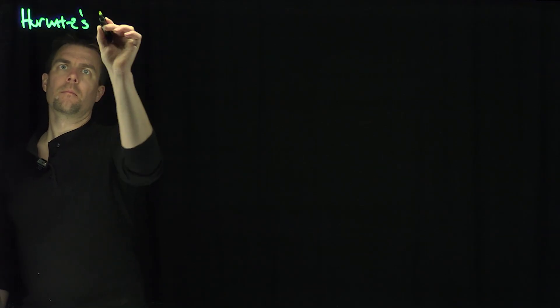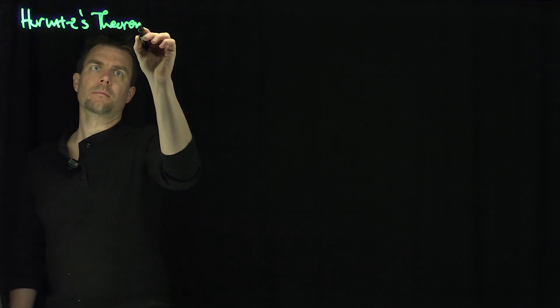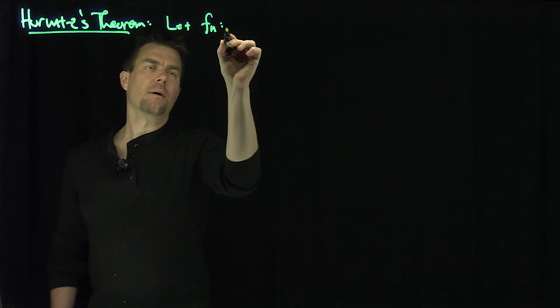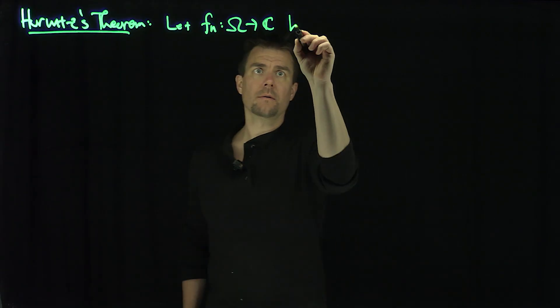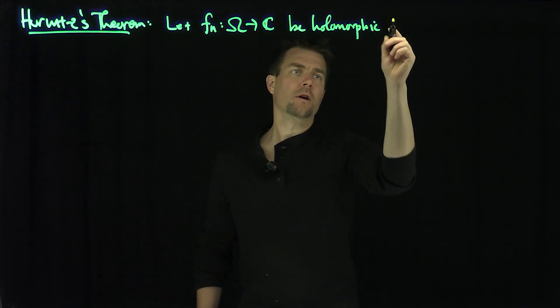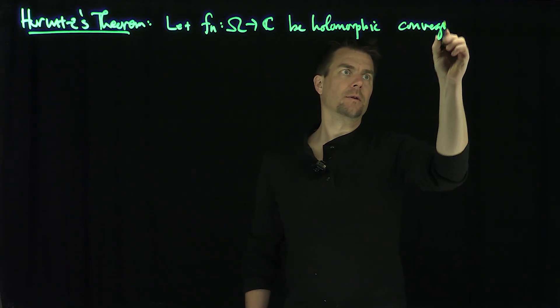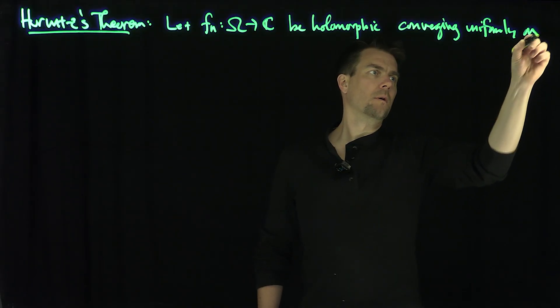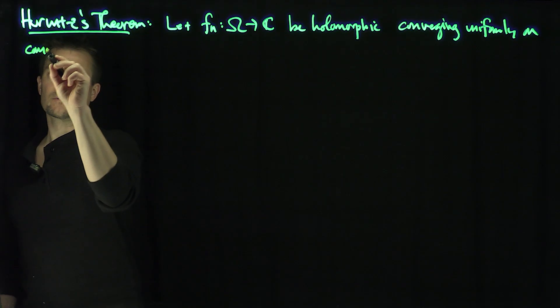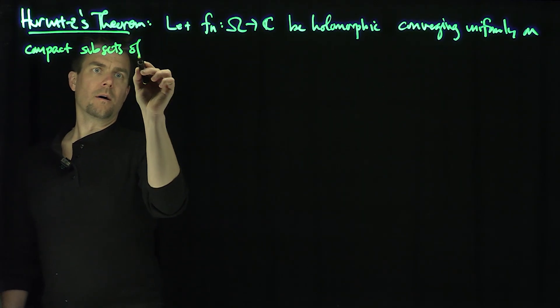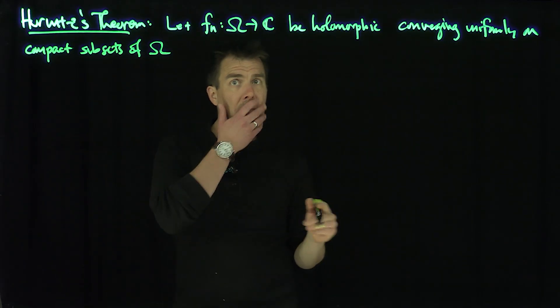So Hurwitz's theorem states the following: let fn map omega into C be holomorphic converging uniformly on compact subsets of omega to f,